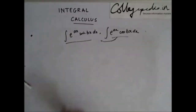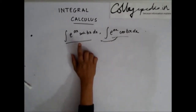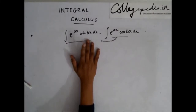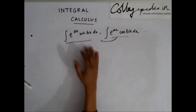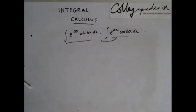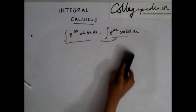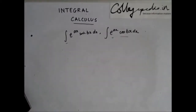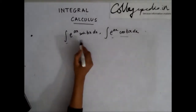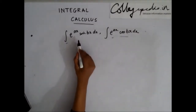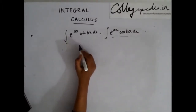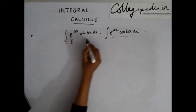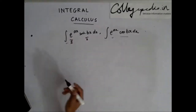This is based on integration by parts. Try this on your own, and if you are not able to solve it, just have a look at the solution. The solution is as follows. If I follow the I-LATE principle, then e^(ax) becomes my second function and sin(bx) becomes my first function.